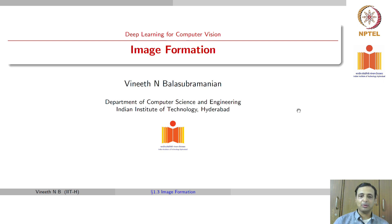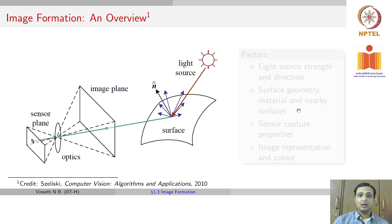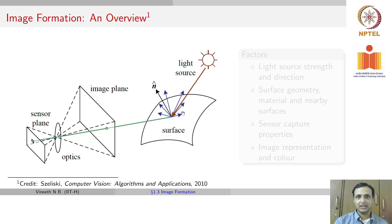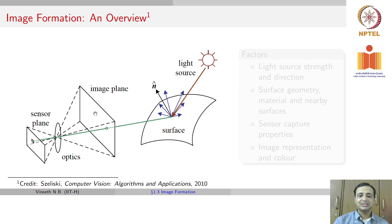Let us move on to the topic of this lecture. As most of you may know, images are formed when a light source hits the surface of an object and light is reflected. Some of that light is reflected onto an image plane, which is then captured through optics onto a sensor plane. That is the overall formation.